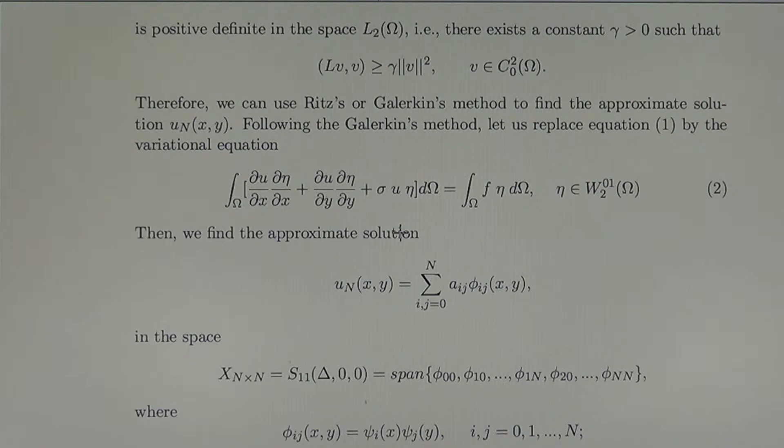Therefore, we can use Ritz-Galerkin or Galerkin's method to find the approximate solution. Let us replace equation 1 by its variational form. We know from previous lectures that the variational form of that equation is the integral over omega of this expression, and the right-hand side is F eta for all eta in W02 space, the Sobolev space W012 on omega. This is the energetic space generated by the positive definite operator L.